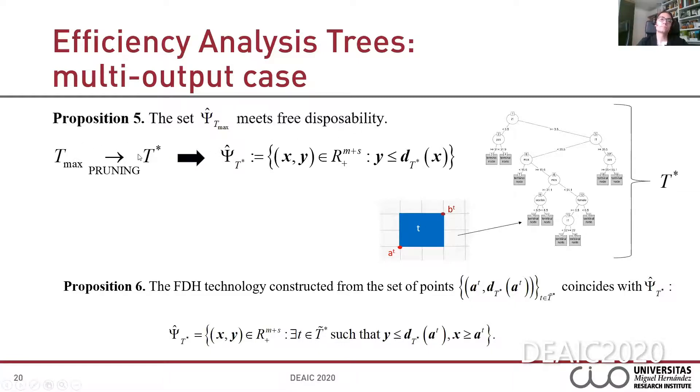Psi Tmax contains the input-output vectors such that given a non-negative input vector X, the output vector is Pareto dominated by the output vector estimated by the EAT algorithm for the input vector X. Then we can prove that this set, Psi Tmax, satisfies the property of free disposability. Additionally, after pruning Tmax, we get the subtree T star. From this final tree, we again define a predictor, d T star, and an associated production possibility set Psi T star, which also satisfies free disposability. This is really our proposal as Psi T star as estimation of the underlying technology.